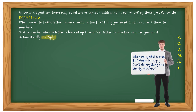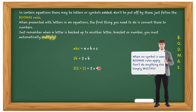When no symbol is seen, BODMAS rules apply — don't do anything else, simply multiply. So: abc just means a times b times c; 2b means 2 times b; two backed up against brackets means once you solve the bracket you automatically multiply. For powers: 6 to the power of 2 means 6 times 6, and 5 to the power of 3 means 5 times 5 times 5. Remember the rule — when no symbol is seen, simply multiply.